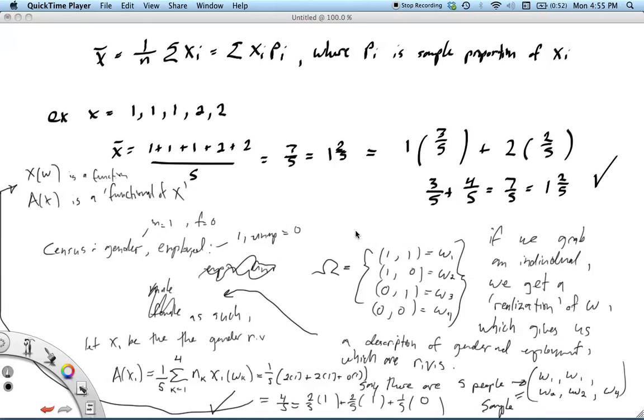So this is the way we want to see it. Our overall sample space, Ω, consists of these possible points. You could be male and employed, male and unemployed, female and employed, or female and unemployed.